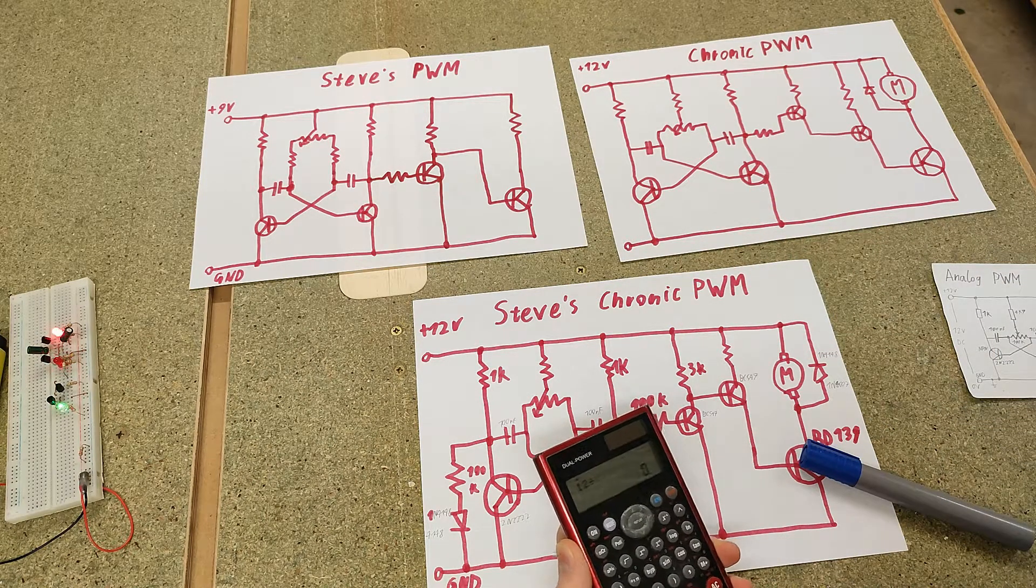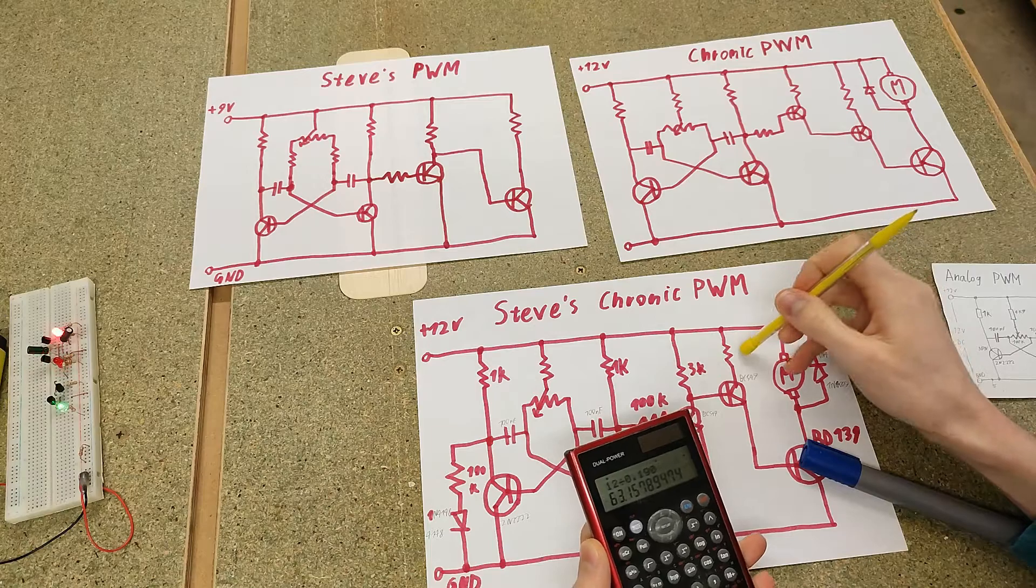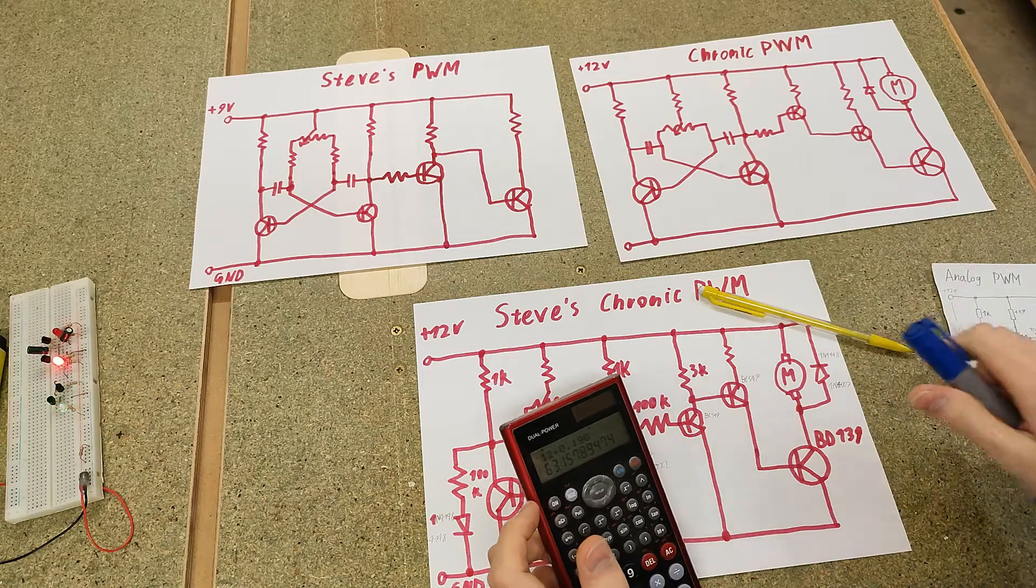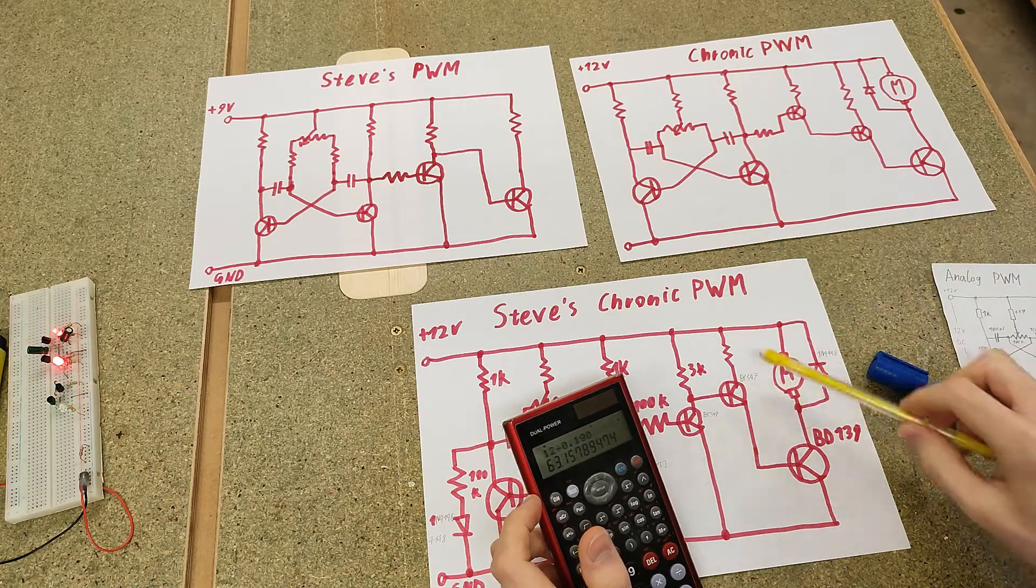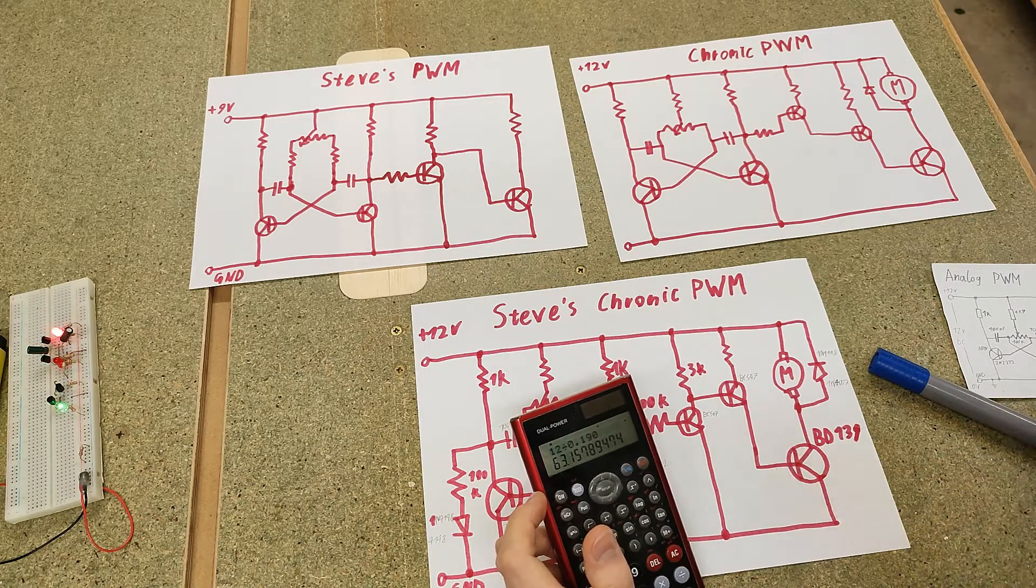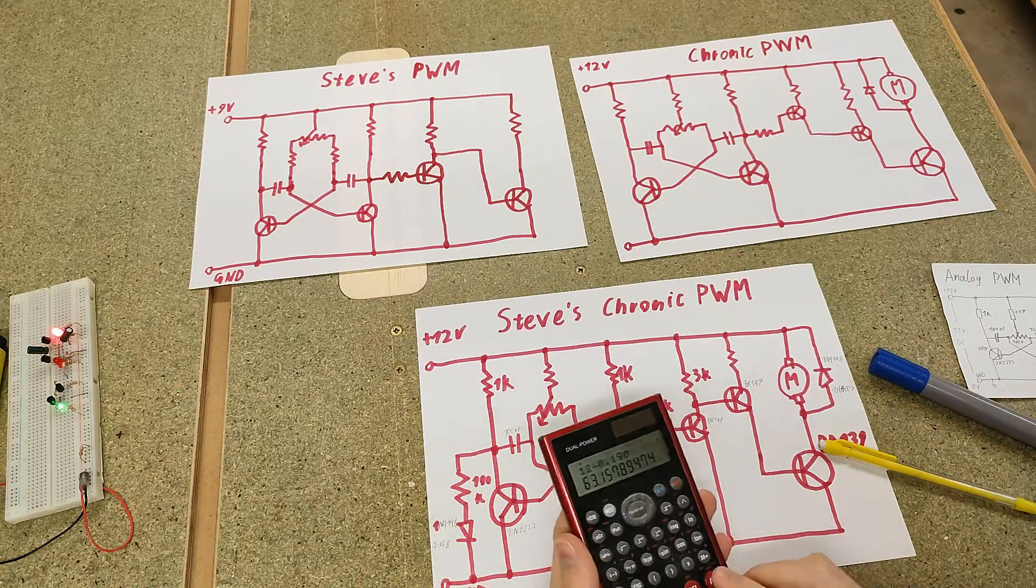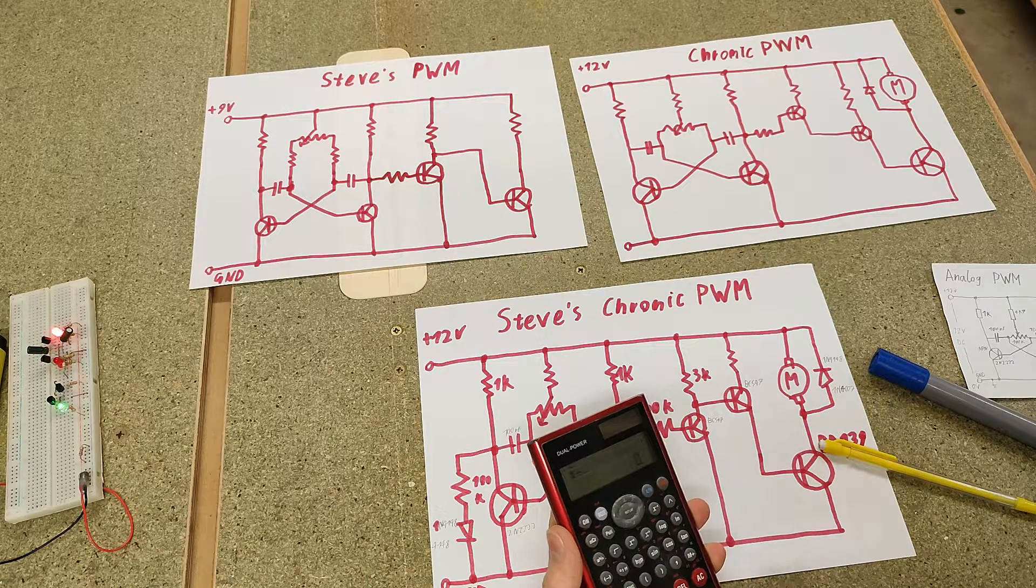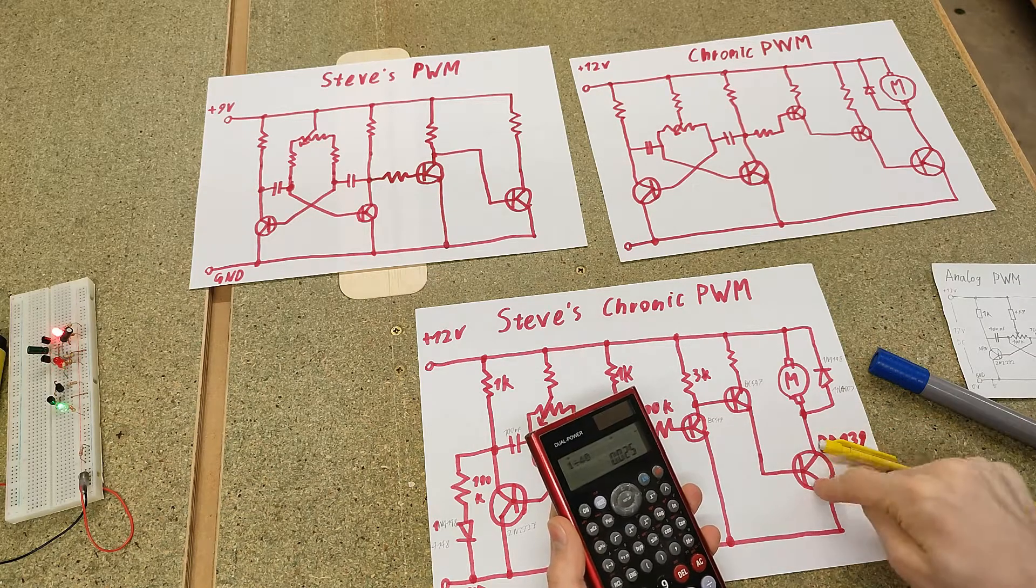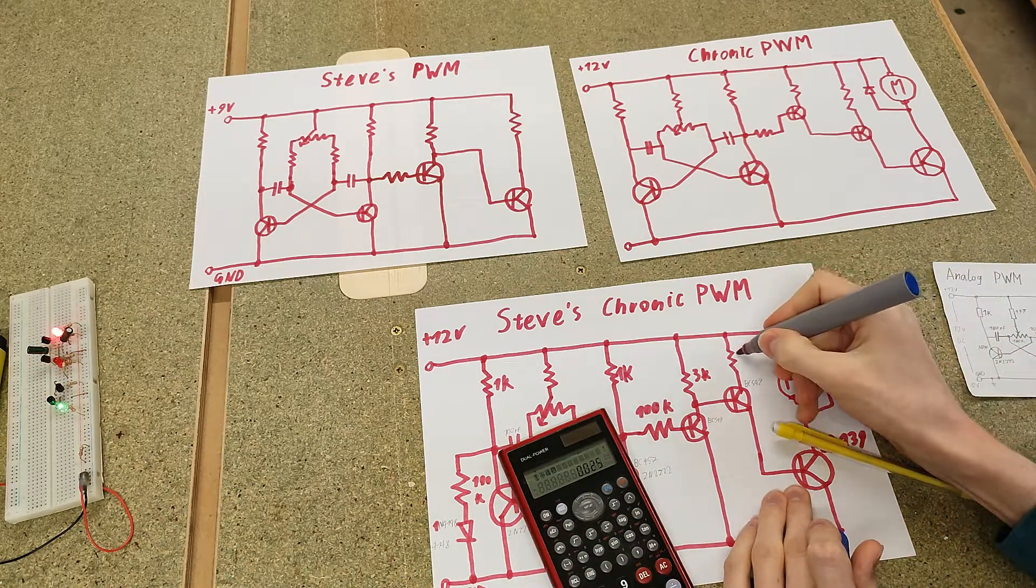So we simply divide 12 by 190mA. 12V divided by 0.190 is 63 ohms for this resistor. So we could just put a 75 ohm resistor here. Or we could just go higher. 100 ohms maybe. Because this transistor has a current gain of 40. So if we take the 1A capability, 1A divided by 40 is 25mA to switch 1A via this transistor. So there is a lot of margin. Let's just put 100 ohm here.